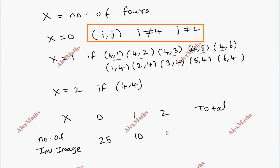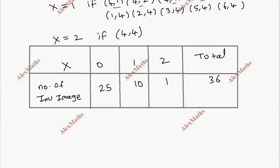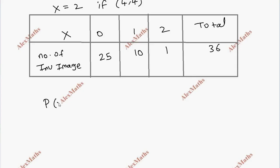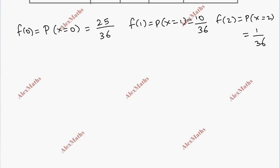The total number of outcomes is 36. So the probability mass function values are: f(0) = P(X=0) = 25/36, f(1) = P(X=1) = 10/36, and f(2) = P(X=2) = 1/36.